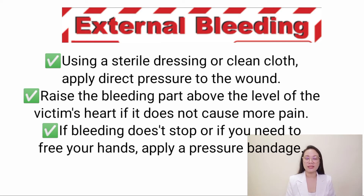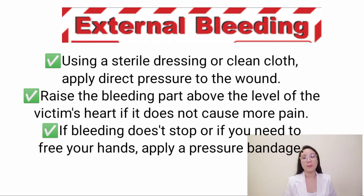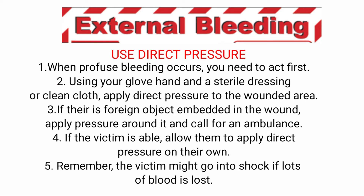Using a sterile dressing or clean cloth, apply direct pressure to the wound to stop the bleeding. Raise the bleeding part above the level of the victim's heart if it does not cause more pain. If bleeding doesn't stop or if you need to free your hands, apply a pressure bandage. When profuse bleeding occurs, act first — using your gloved hand and a sterile dressing, apply direct pressure to the wounded area. If there is a foreign object embedded in the wound, apply pressure around it and call for an ambulance. If the victim is able, allow them to apply direct pressure on their own.